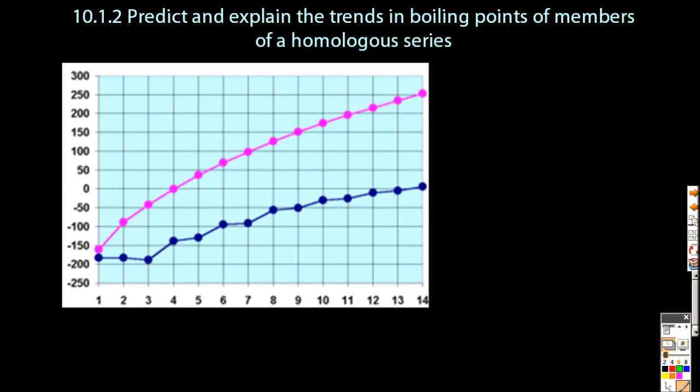Okay, so this graph shows the pattern of boiling and melting points for linear alkanes. Well, you wouldn't know that until I added these axes, though.